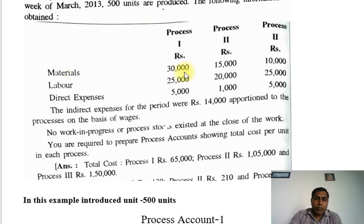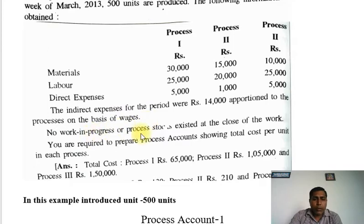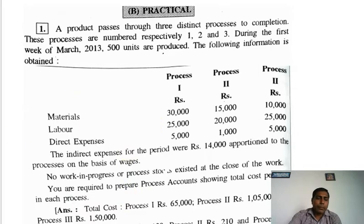The following information is obtained: Material — Process 1: 30,000; Process 2: 50,000; Process 3: 10,000. Labor — Process 1: 25,000; Process 2: 20,000; Process 3: 25,000. Direct expenses — Process 1: 5,000; Process 2: 1,000; Process 3: 5,000. Indirect expenses for the period: Rupees 14,000, apportioned to the processes on the basis of wages. No work in progress or process stocks exist at the close. You are required to prepare process accounts showing total cost and cost per unit.